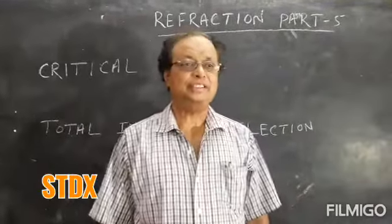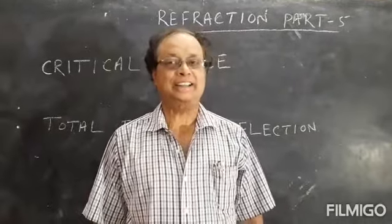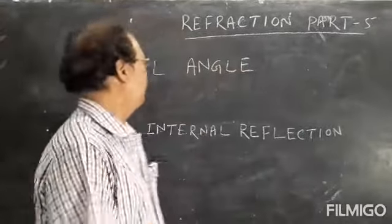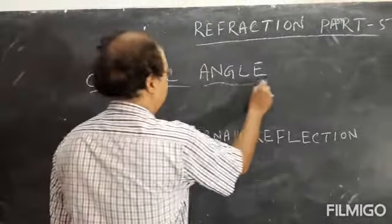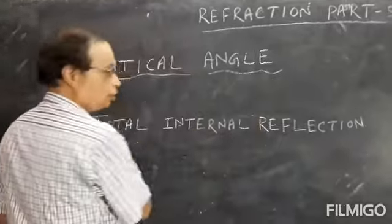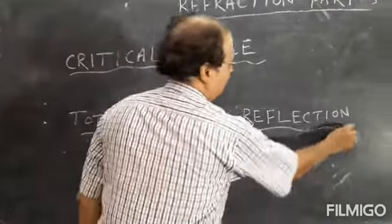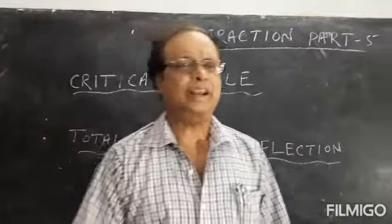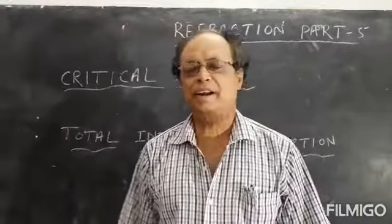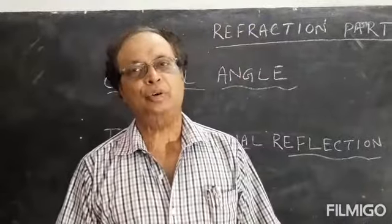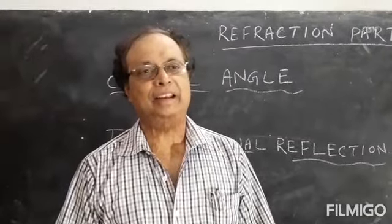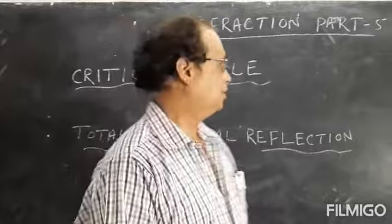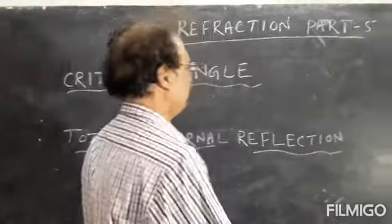Good morning, my dear students. Today we will discuss about the critical angle and the total internal reflection of light. Now, when light passes from a denser medium to a rare medium, it bends away from the normal.